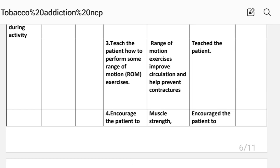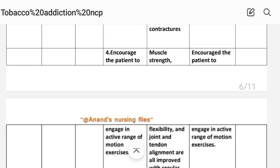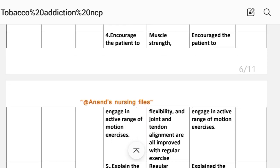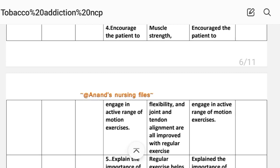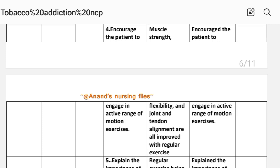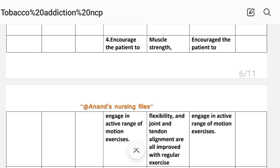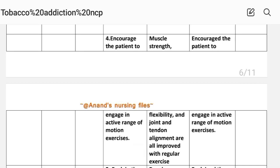Number three: teach the patient how to perform range of motion exercises. Rationale: range of motion exercises improve circulation and help prevent contractures. Implementation: assess the patient about exercise. Number four: encourage the patient to engage in active range of motion exercises. Rationale: range of motion exercises improve muscle strength, flexibility, and joint and tendon alignment. Implementation: assess the patient to engage in active range of motion exercises.